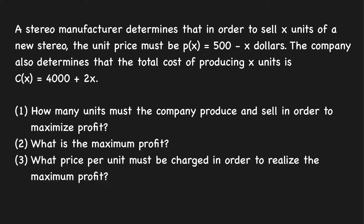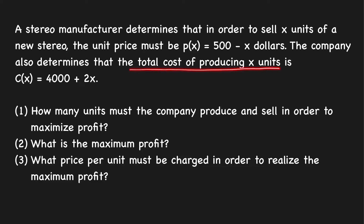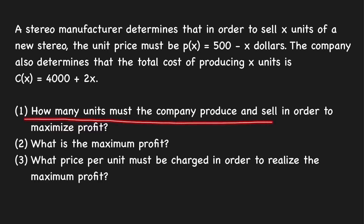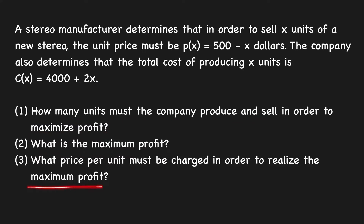In this video, we're going to solve an optimization problem in business and economics. A stereo manufacturer has determined that in order to sell X units of a new stereo, the unit price must be P(X) = 500 minus X. The company also determines that the total cost of producing X units is given by C(X) = 4,000 plus 2X. We'll answer: how many units must be produced and sold to maximize profit? What is the maximum profit? And what price per unit must be charged to realize maximum profit?